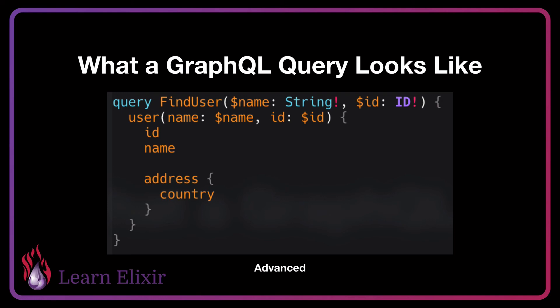The other thing we see in this query is that we're also including the address object with just the country, and so this is our expressive way of specifying the specific relations we want to come back in our query and exactly what fields we want from that relation. This can also be nested as much as you want, so if the address has a country which has a bunch of codes, you could specify the country object and put code underneath that.